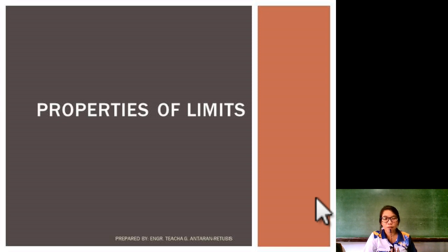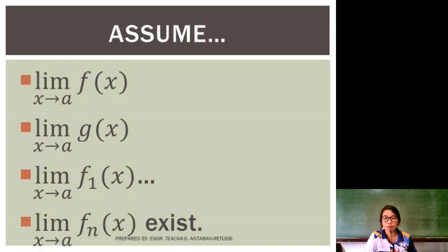Now, before we start with the properties, let us first assume that the limits that we will be using here, just like for example the limit of f of x, the limit of g of x, the limit of f sub 1 x, and so on until f sub n, does exist. Put that in mind that the limits we will be using in these examples do exist.